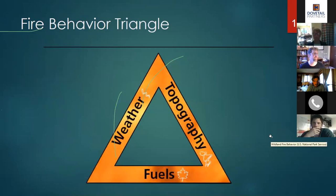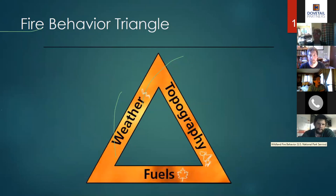This is what we call the fire behavior triangle. These three factors are the number one contributors to extreme fire behavior — or the high fire danger you might see on DNR signs: topography, fire weather, and fuels. I'll go into detail on each one, starting with topography.